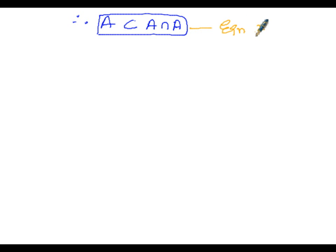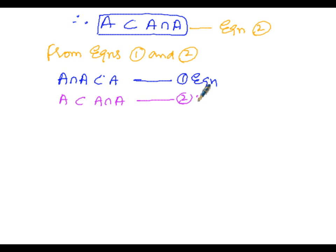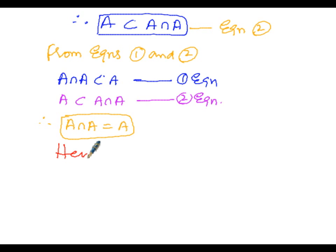From equation 1 — A intersection A is a subset of A — and equation 2 — A is a subset of A intersection A — it is clear that when LHS is a subset of RHS and RHS is a subset of LHS, then LHS equals RHS. Therefore, A intersection A equals A. Hence proved. In this manner we have proved both idempotent laws: A union A equals A and A intersection A equals A.